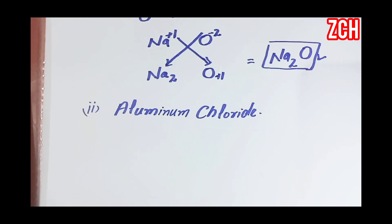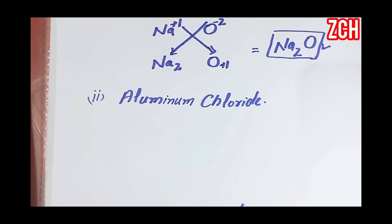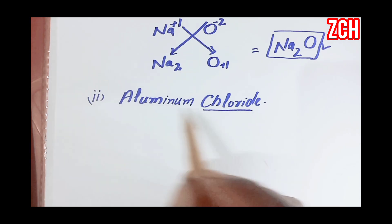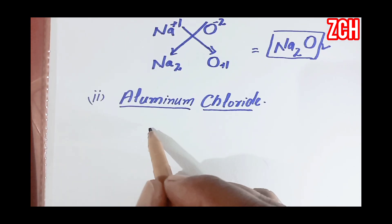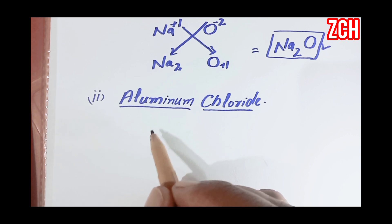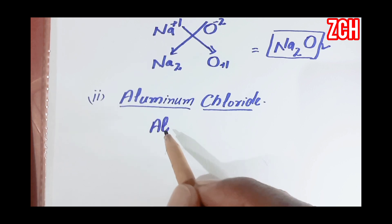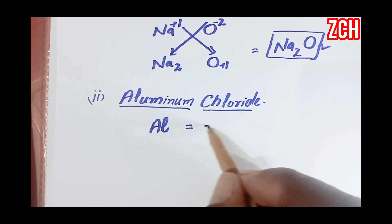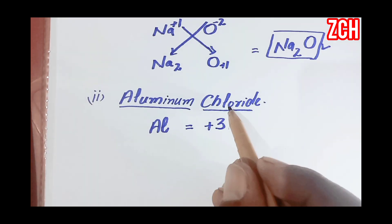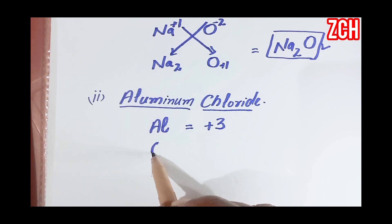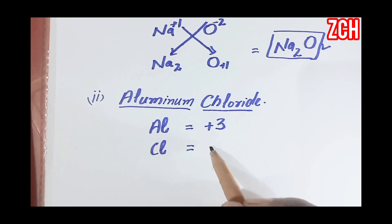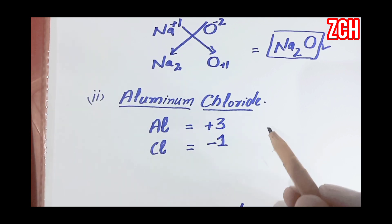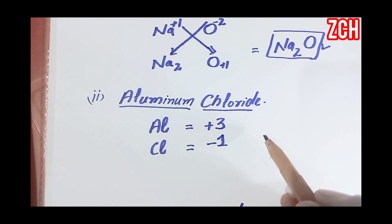Next we will write the chemical formula of aluminium chloride. In aluminium chloride there are two elements: the first is aluminium with a valency of plus three, and the second element is chlorine with a valency of minus one.